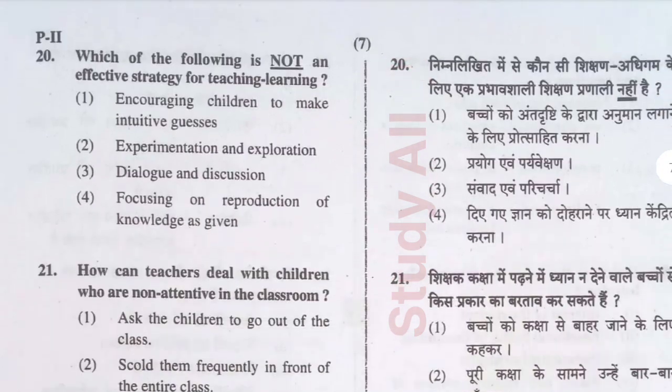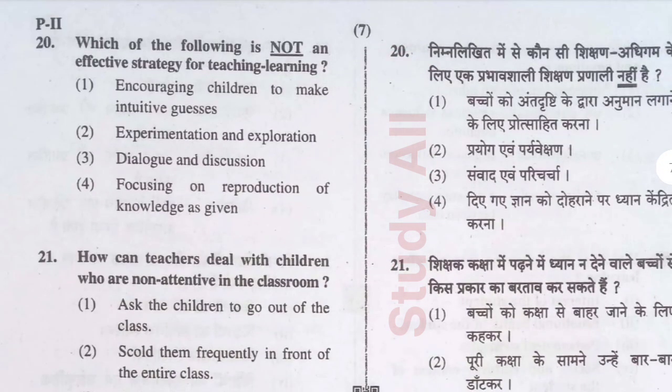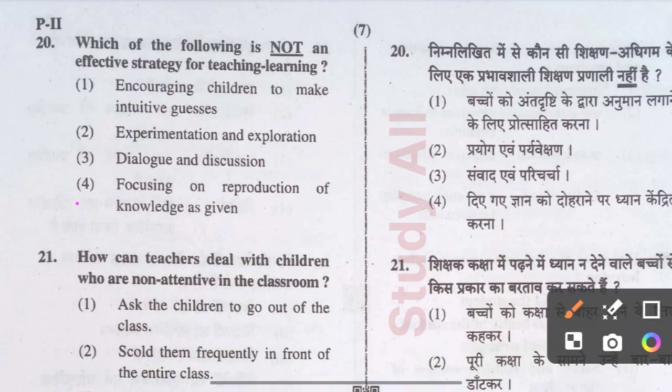Question number twenty: Which of the following is not an effective strategy for teaching and learning? The correct option is option four: focusing on reproduction of knowledge as given.